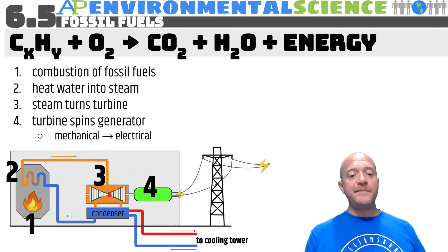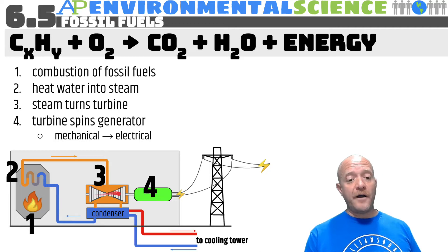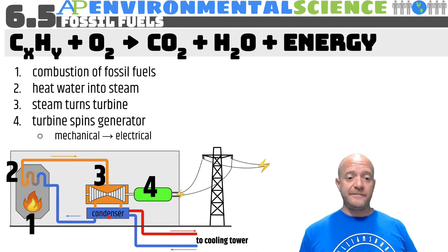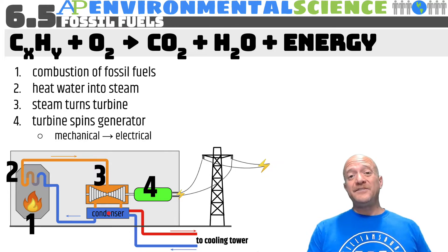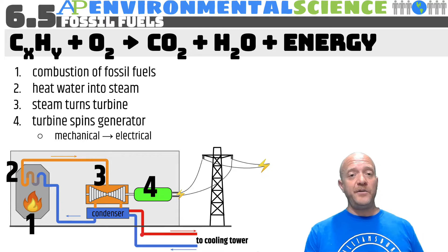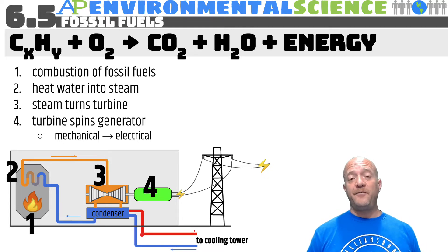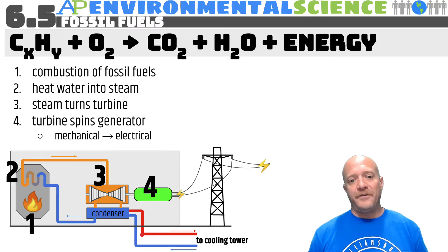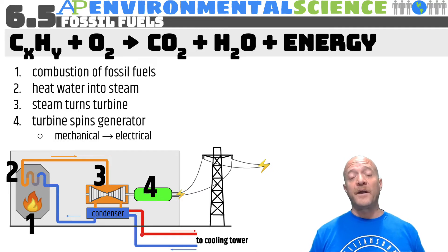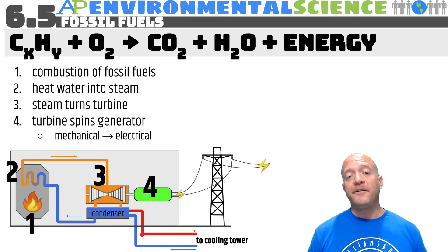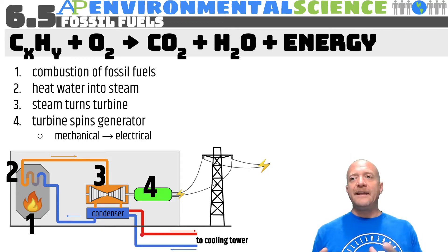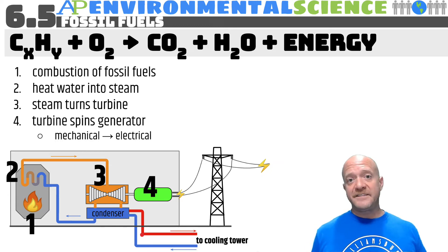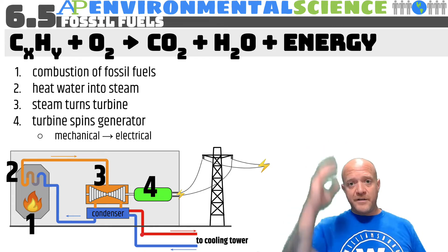After the steam comes through and spins the turbine, you have really hot water. There's a condenser underneath where the water cools and condenses back to a liquid. If you return this hot water directly to the environment — into a lake or river — it would cause thermal shock, essentially killing fish, plants, and all aquatic organisms. So the water goes to a cooling tower, which lets it contact the atmosphere and release the excess heat. Those triangular structures with steam coming out, like in the Simpsons intro, are cooling towers.